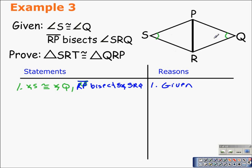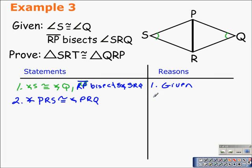This segment bisects an angle, therefore the two halves are going to be equal. So let's get that written down: angle PRS is congruent to angle PRQ, by the definition of angle bisector. We can mark them congruent.